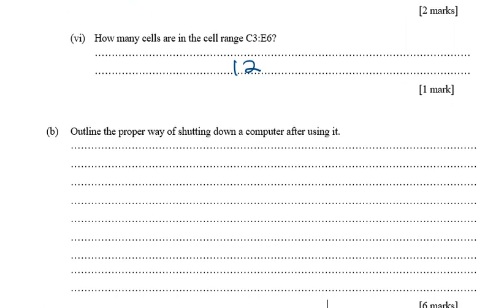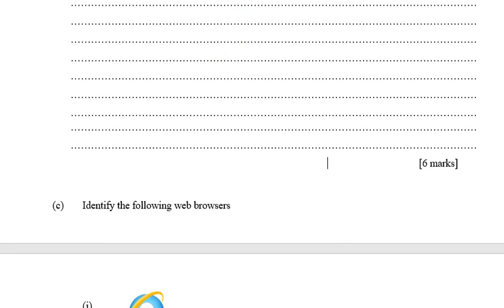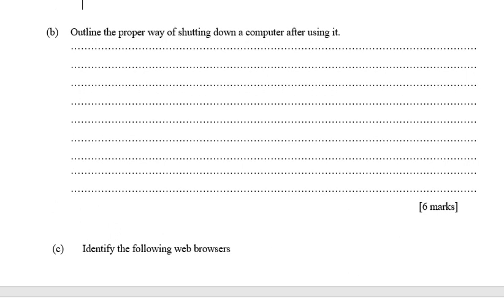The next question says: outline the proper way of shutting down a computer after using it. First, close all programs that have been opened. Second, click on the Start button. Third, click on Shutdown. After the machine shuts down, turn off the power socket and then remove the plug from the wall socket. That is the correct way to shut down a computer.